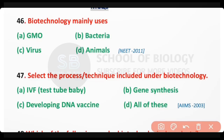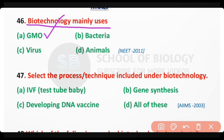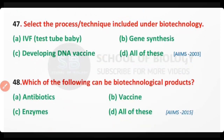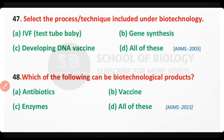Question number 46. Biotechnology mainly uses genetically modified organisms — bacteria, virus, or animals? The correct answer is option A. Biotechnology mainly uses genetically modified organisms.